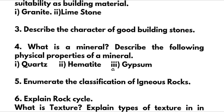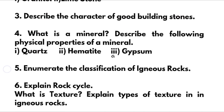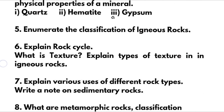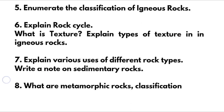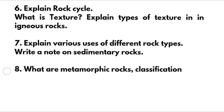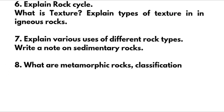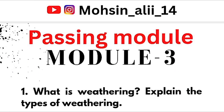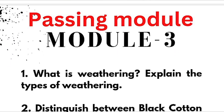Next question: describe the characteristics of good building stones. What is a mineral? Describe the following physical properties of quartz, hematite, and gypsum. Next: enumerate the classification of igneous rocks. Explain the rock cycle. What is texture? Explain types of texture in igneous rocks. Explain various uses of different rock types. Write a short note on sedimentary rocks. Last: what are metamorphic rocks and their classification?